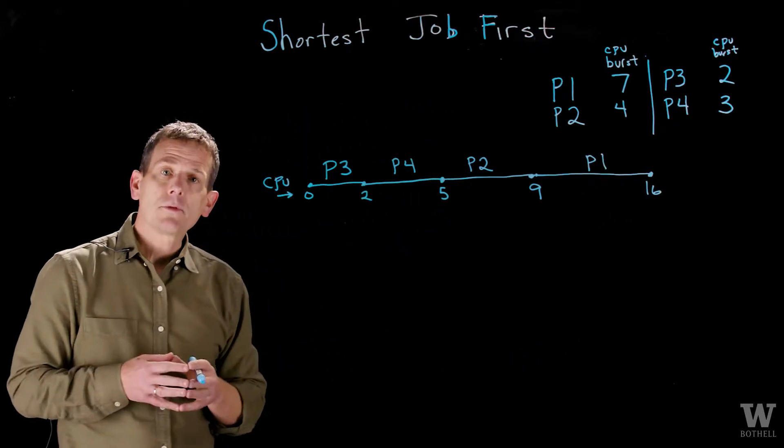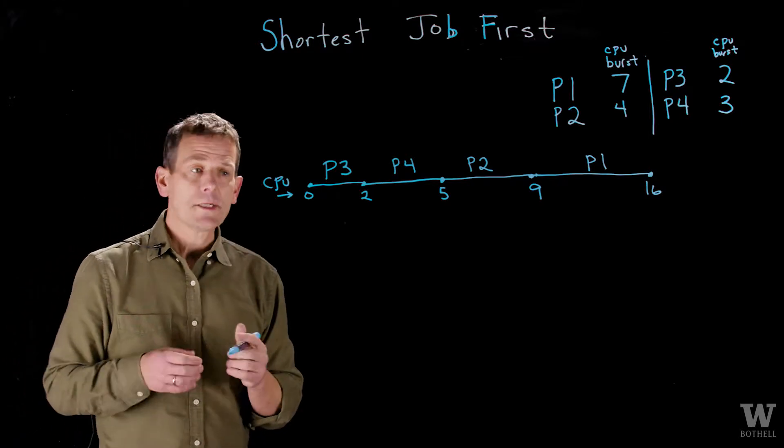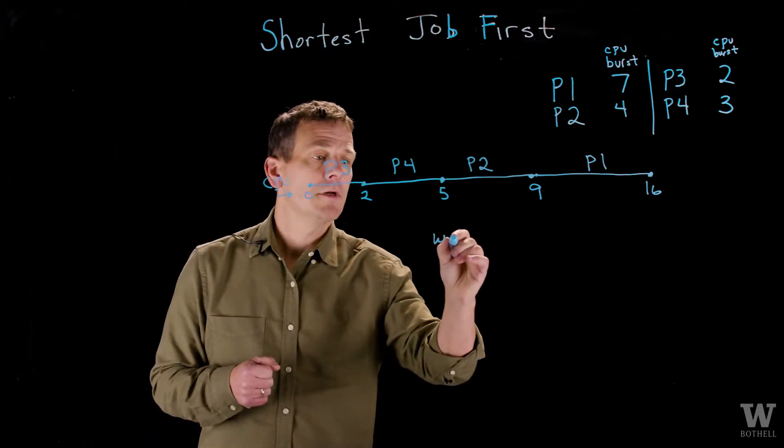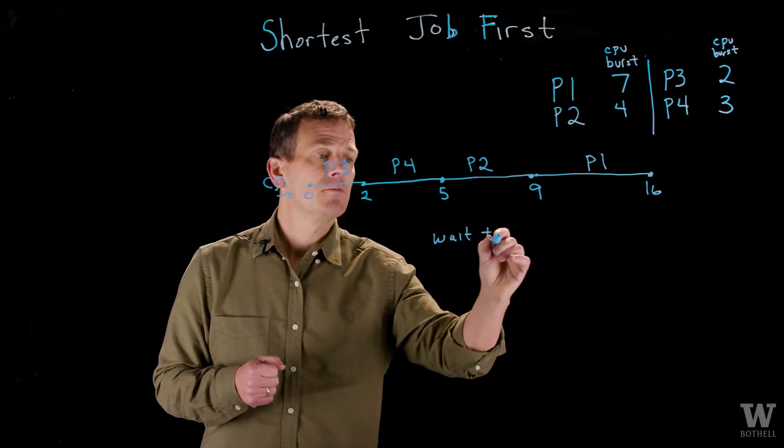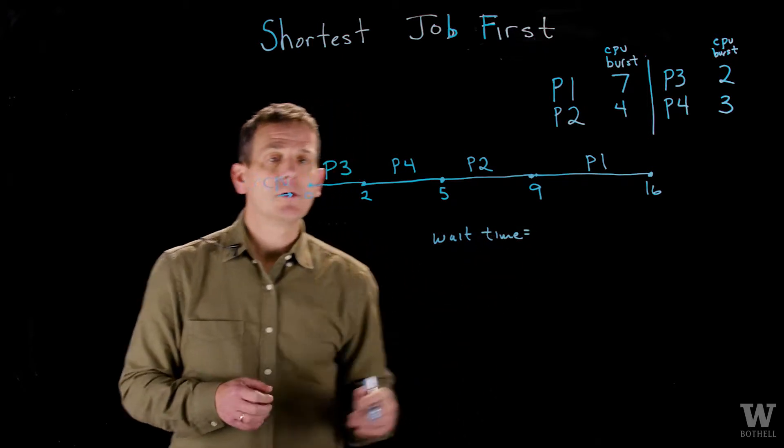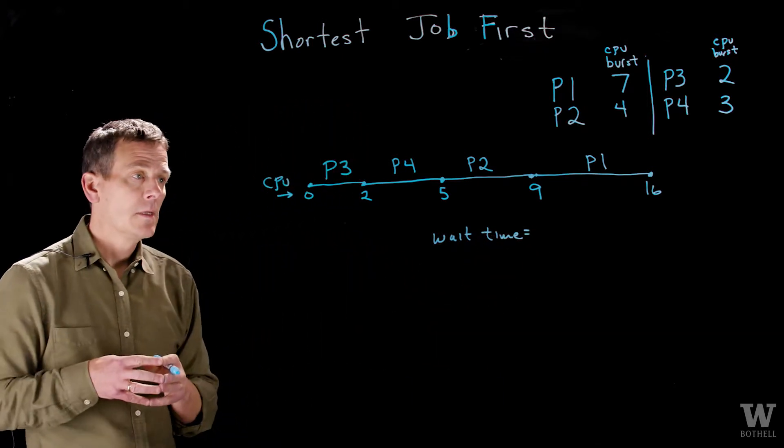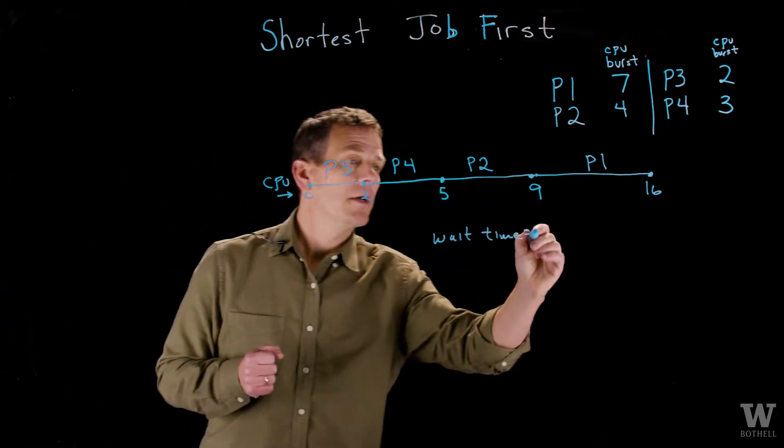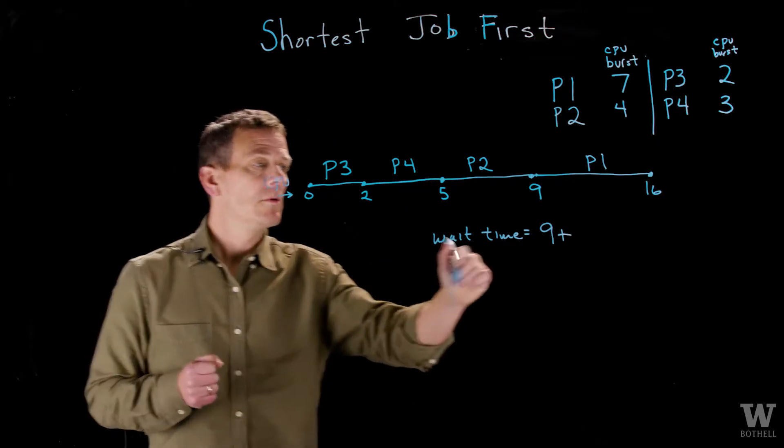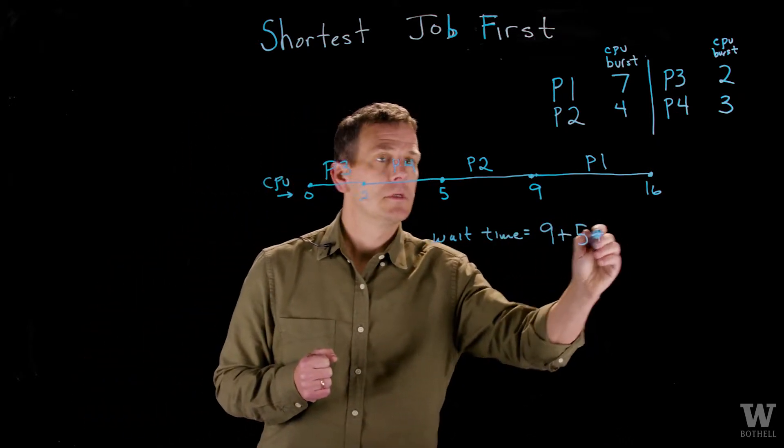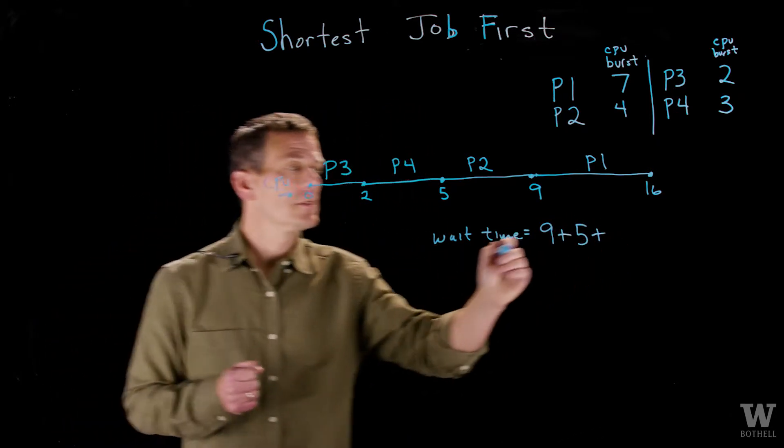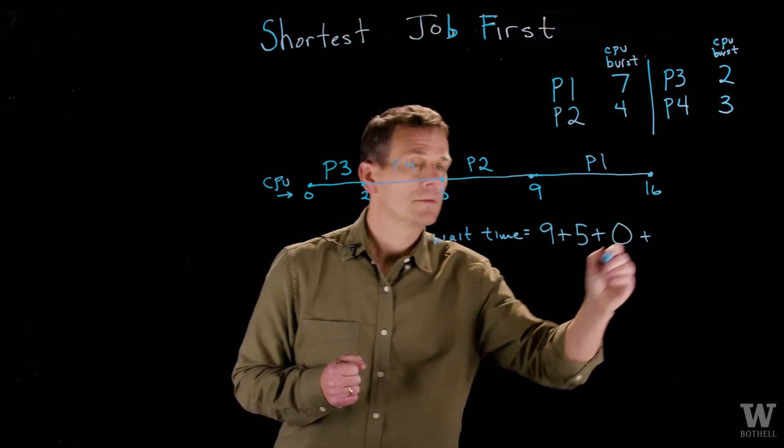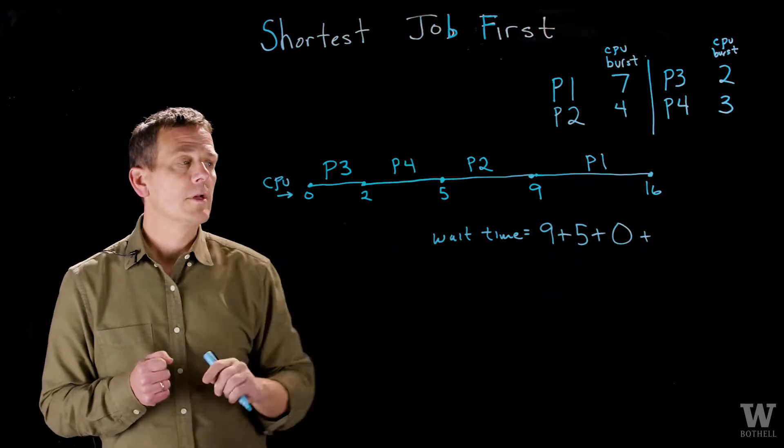Let's calculate some of the metrics we have for this scheduling algorithm. Recall wait time is the amount of time the processes wait in the queue for the CPU. P1 in this case waits 9, P2 waits for 5 units, P3 got the CPU right away so no units, and then P4 waited 2 units.